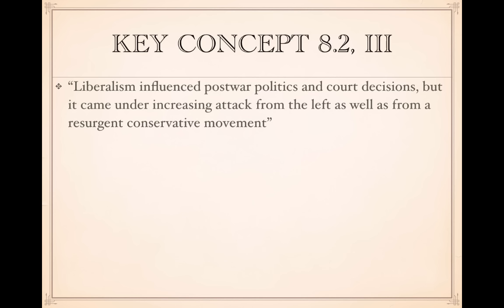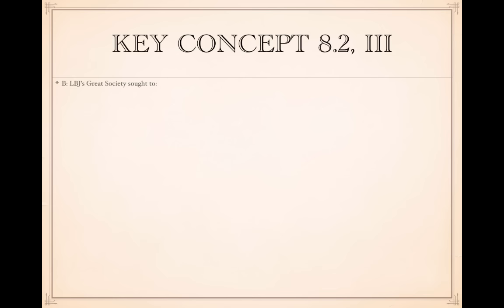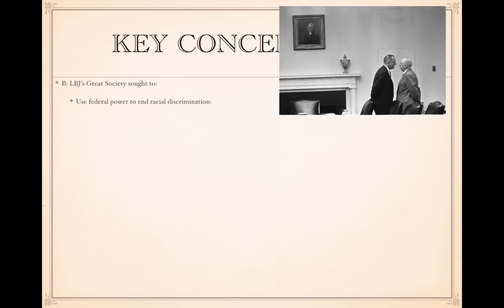Roman numeral three: liberalism influenced post-war politics and court decisions but came under increasing attack from both the left and a resurgent conservative movement on the right. Liberalism meant limiting communism abroad and believing in the power of government to achieve goals at home, reaching its zenith in the mid-1960s under LBJ with the Great Society. The Great Society sought to use federal power to end racial discrimination — a continuation of the New Deal but with a civil rights focus.